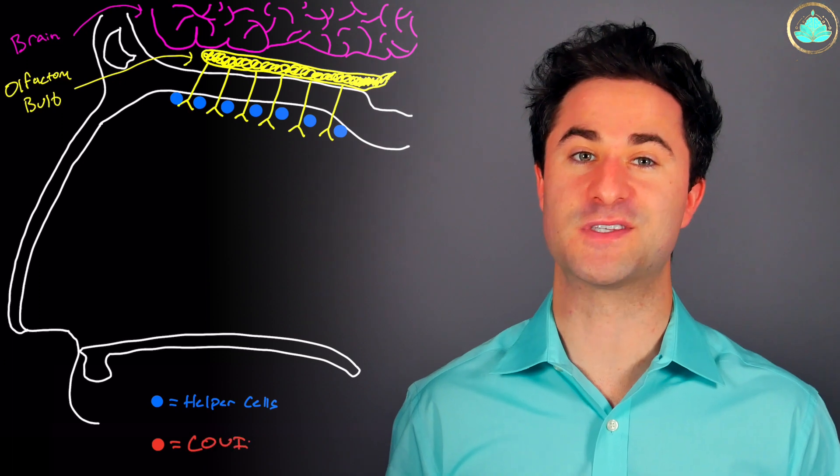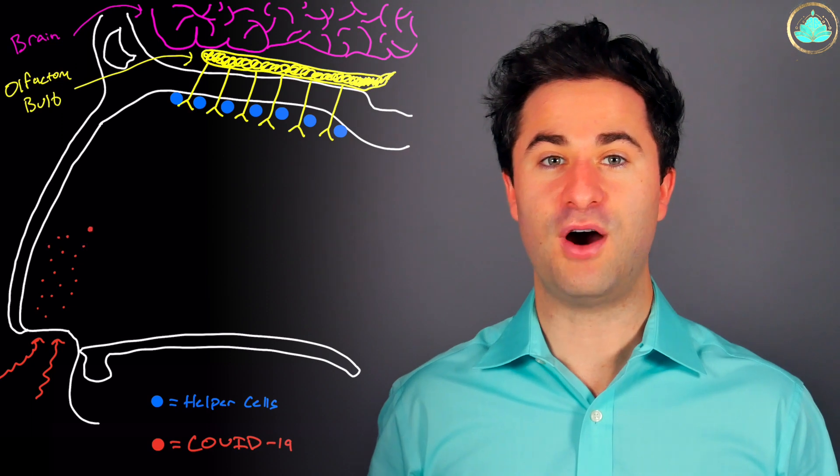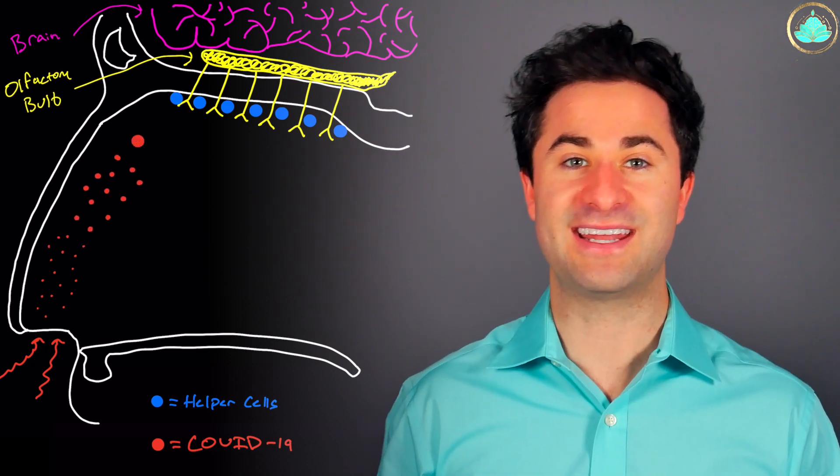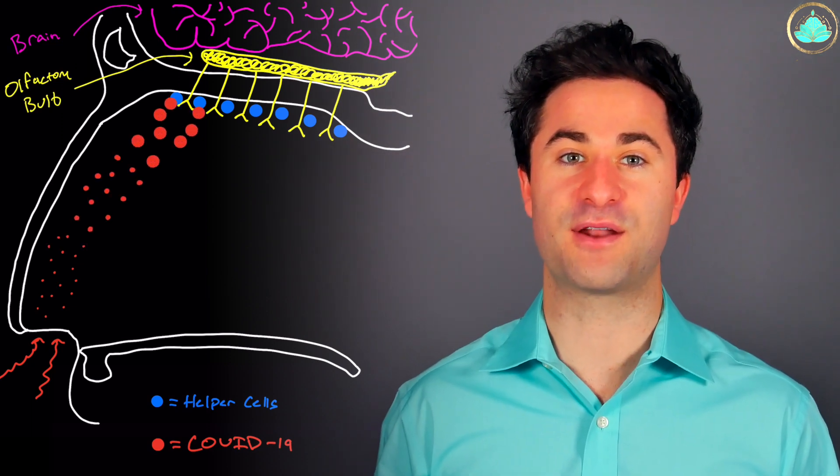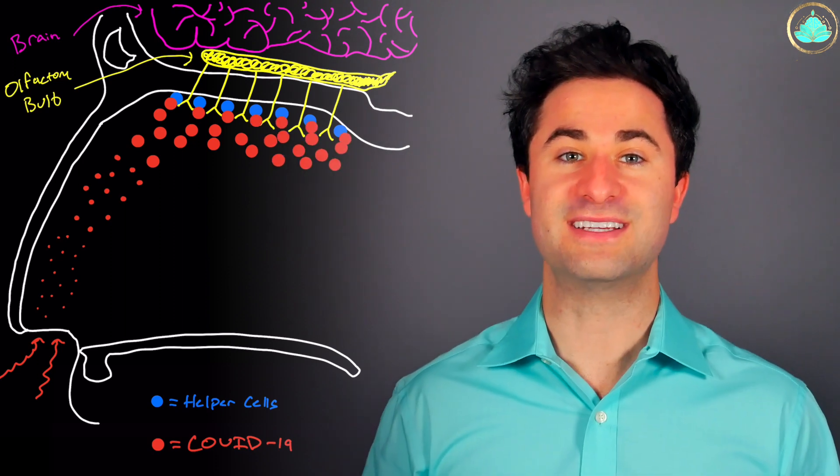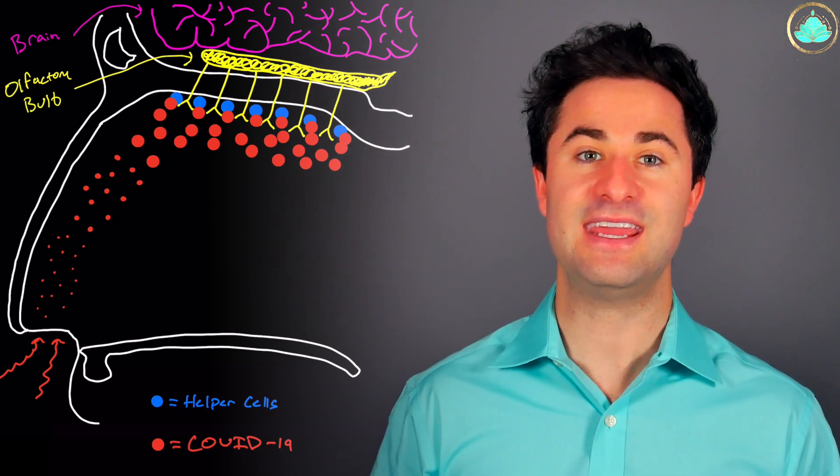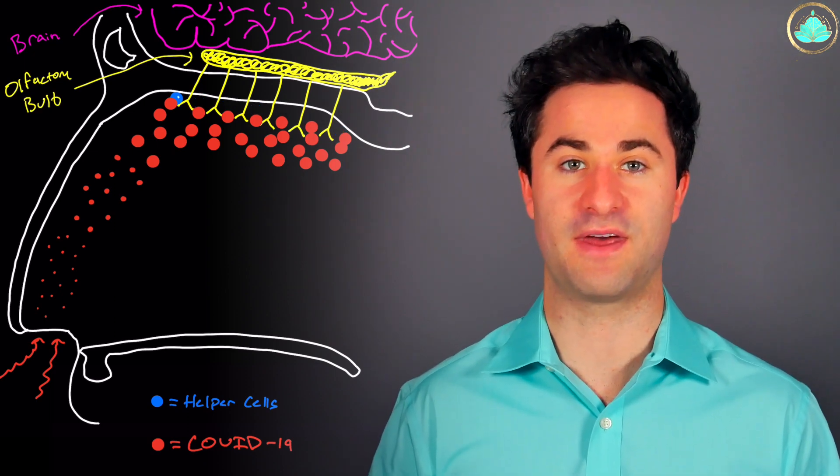In the context of COVID-19 specifically, when the virus particles are breathed in, they travel up through each nostril and attach to those cells that are there in order to keep the olfactory nerves healthy. Once attached, the virus essentially releases its DNA into those cells, ultimately destroying them.